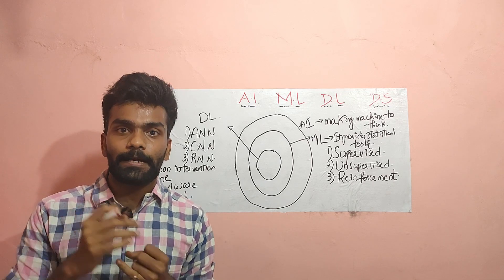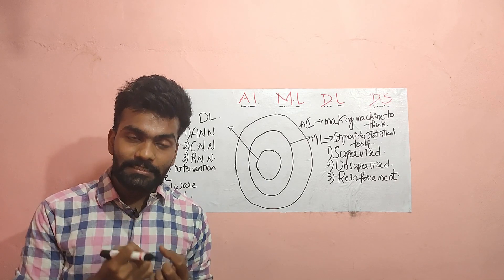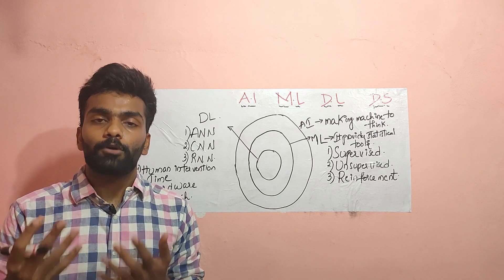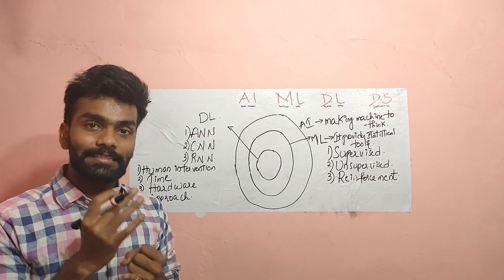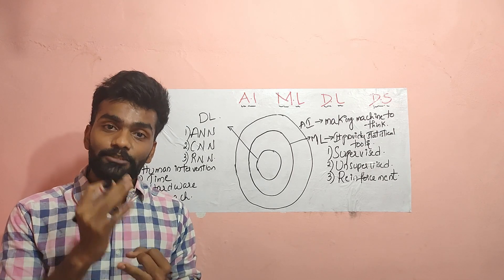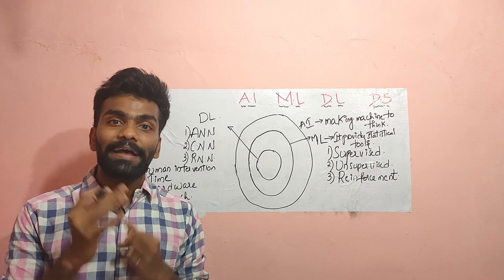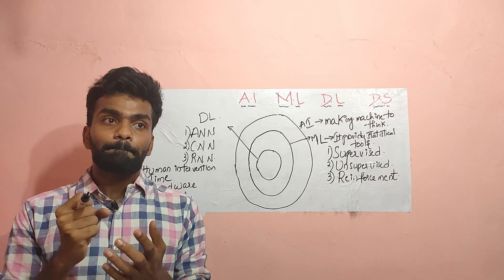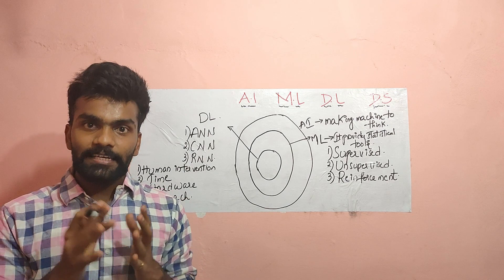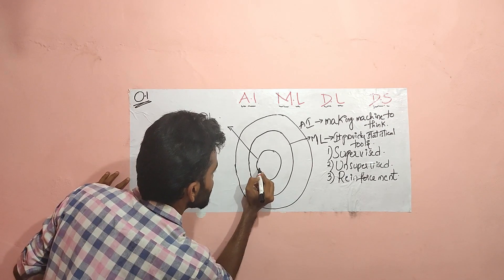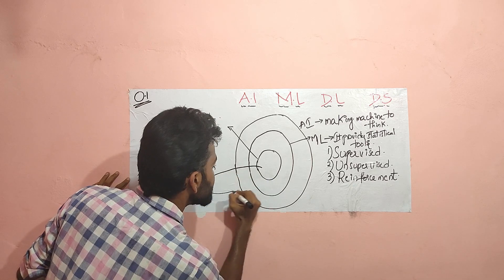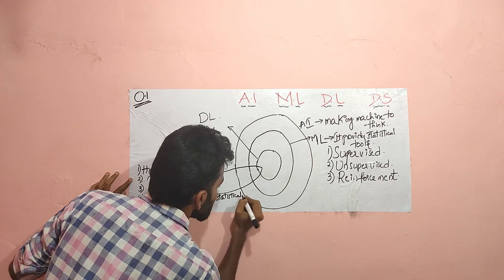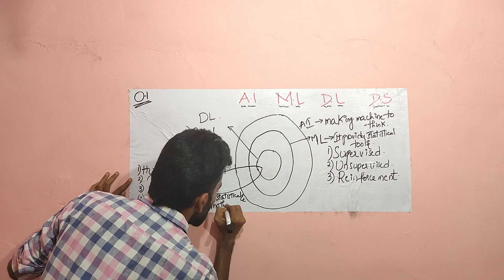Next is data science. Data science is nothing but getting insights from data — we perform tasks like data collection, data cleaning, and other related tasks. Data science is a combination of ML and DL along with statistical and mathematical tools to get insights from the data and use the data wisely.